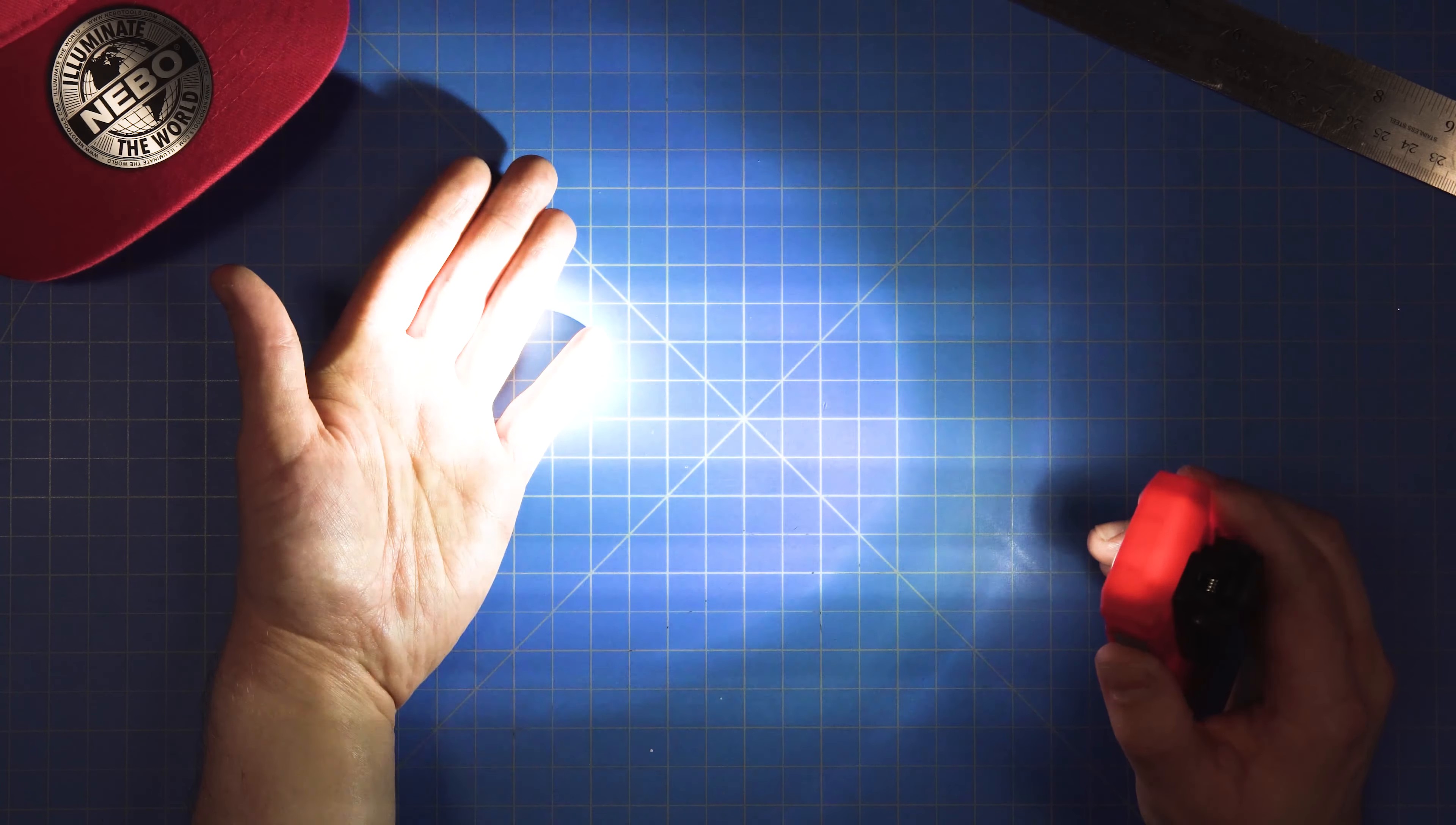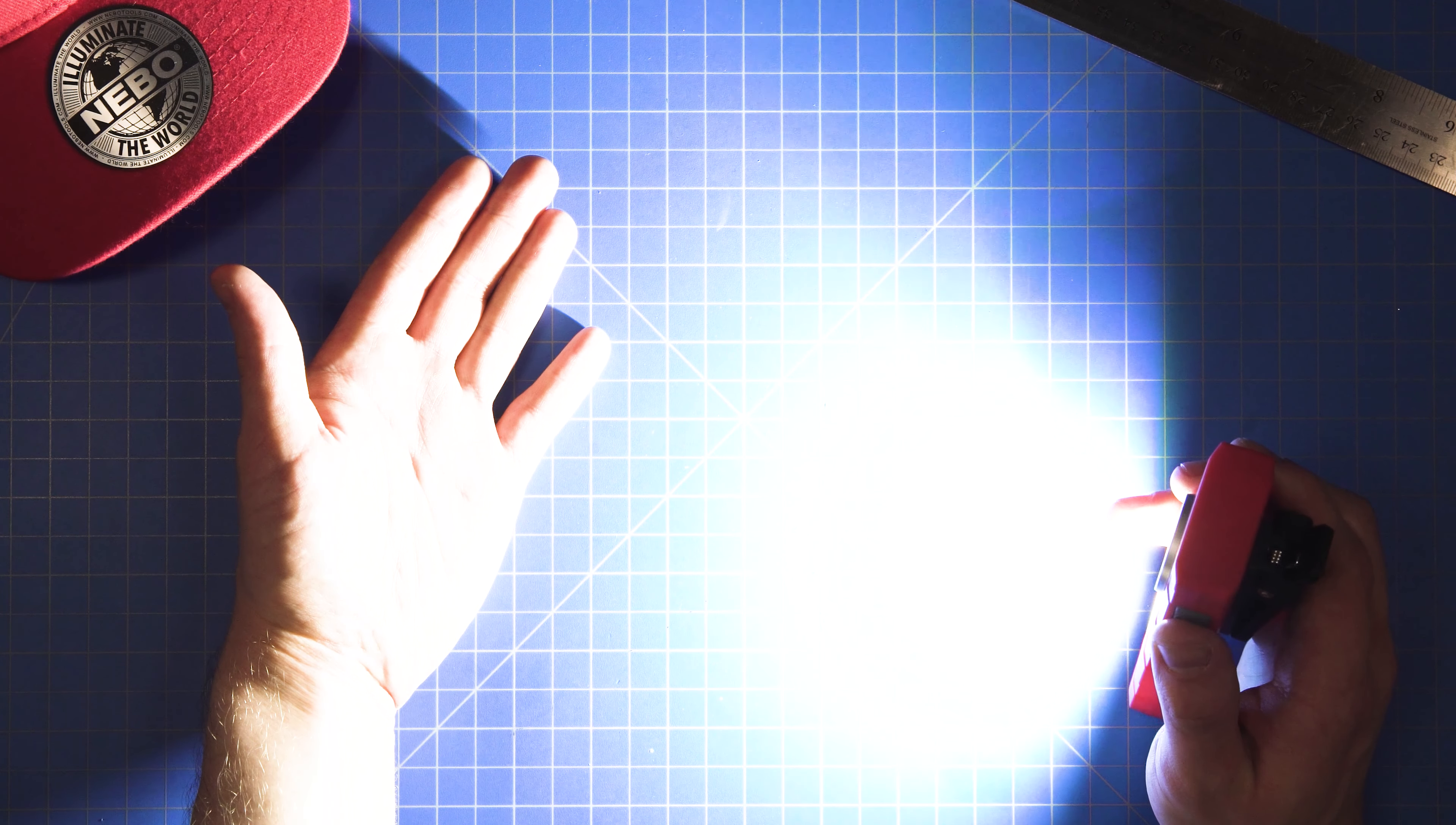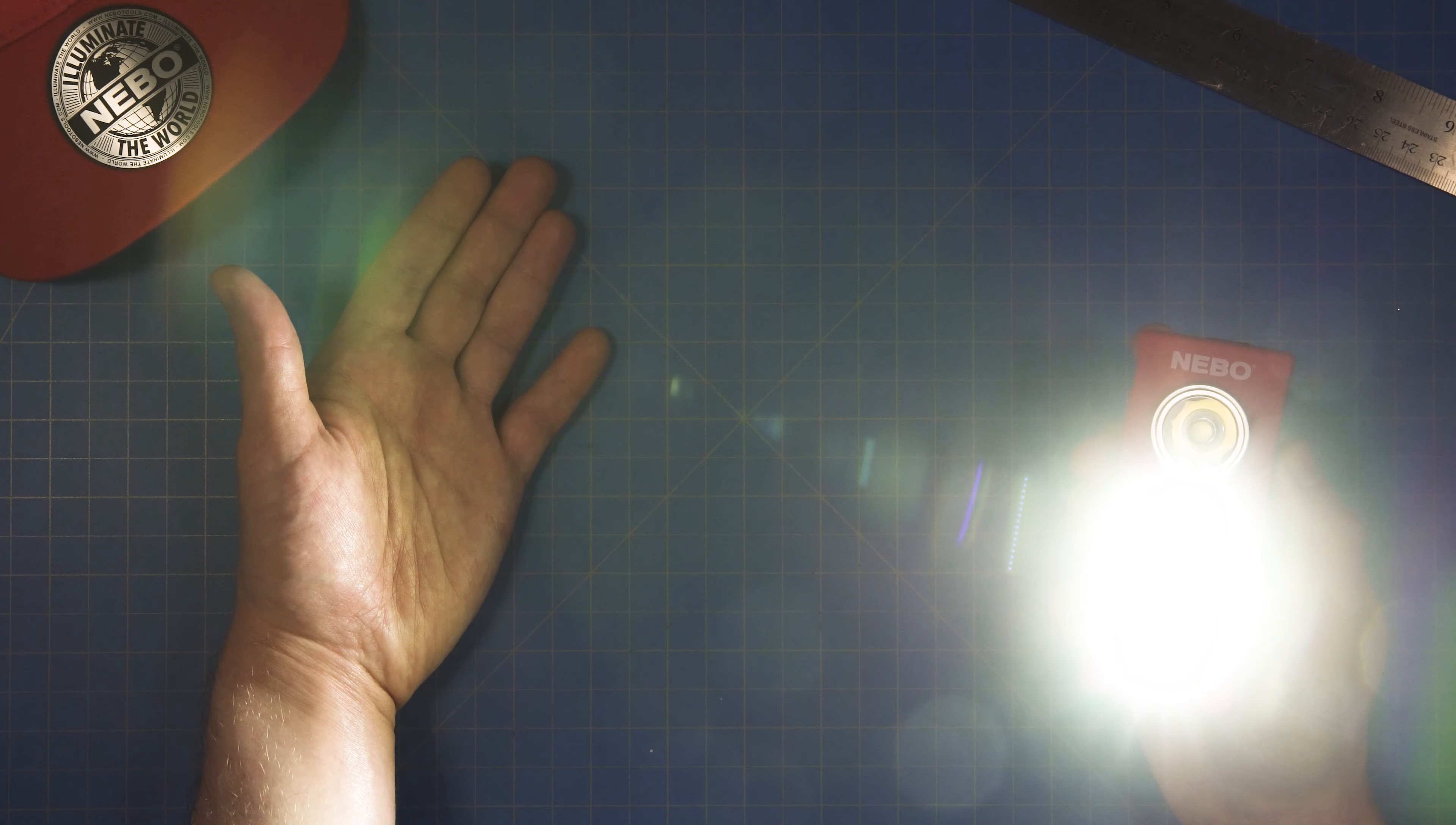Clicking the button again now will turn the light off. But, if you click the button a second time within eight seconds of turning it on, the light will switch to the work light mode.